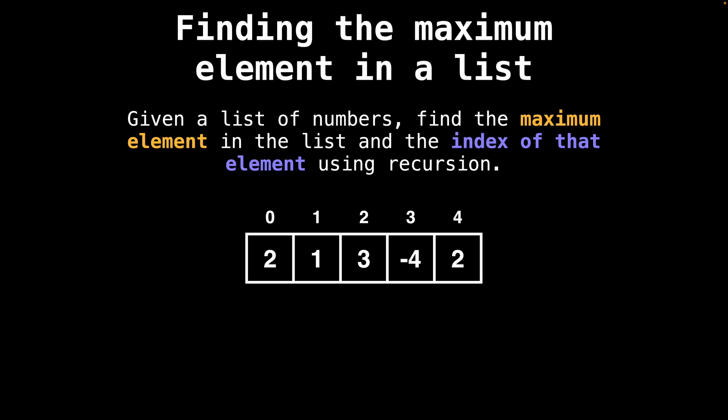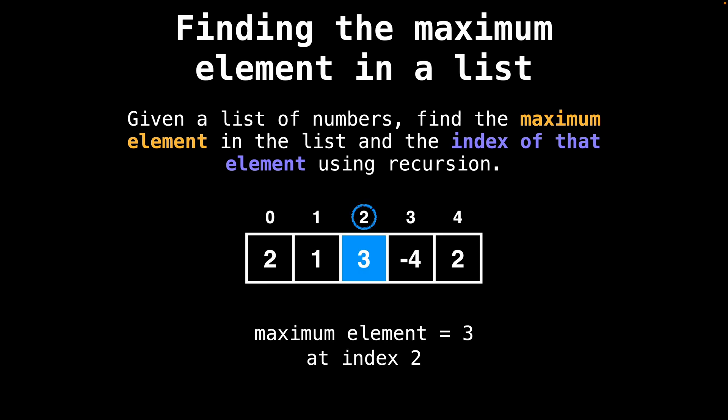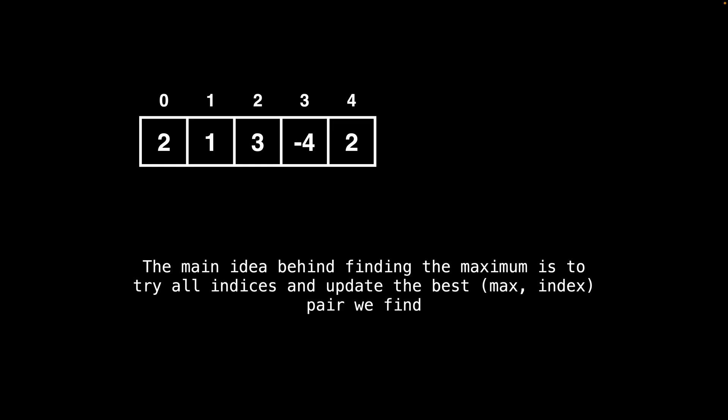In this simple problem, we're going to be finding the maximum element in a list. But instead of just finding the maximum element, we are also going to be returning the index of that maximum element. For example, the maximum element in this list should be three with an index of two. Now let's walk through how the maximum element and its index are actually found. The main idea is to run through all the elements and continuously update the best max index pair that we find.